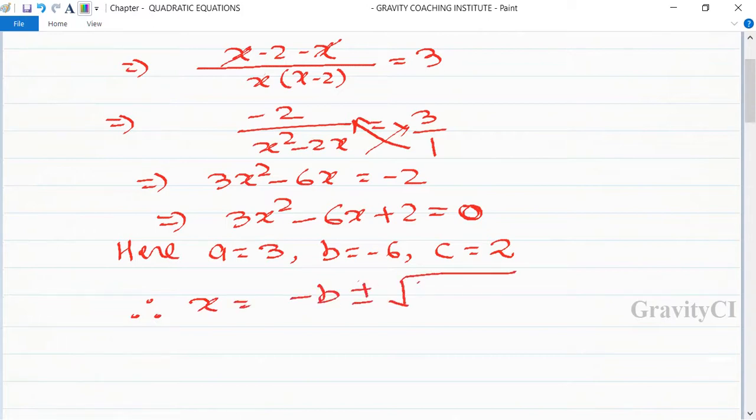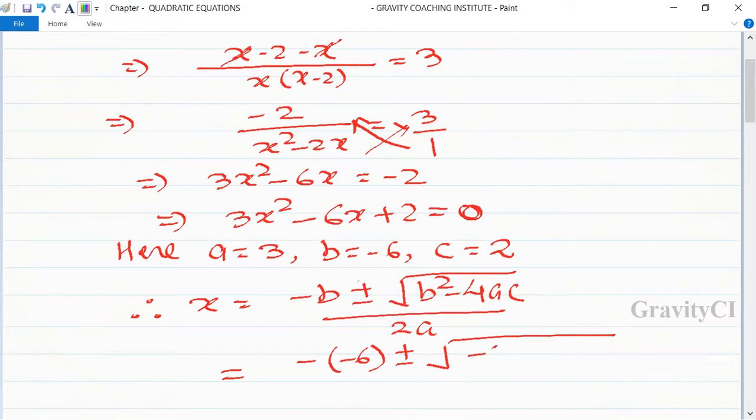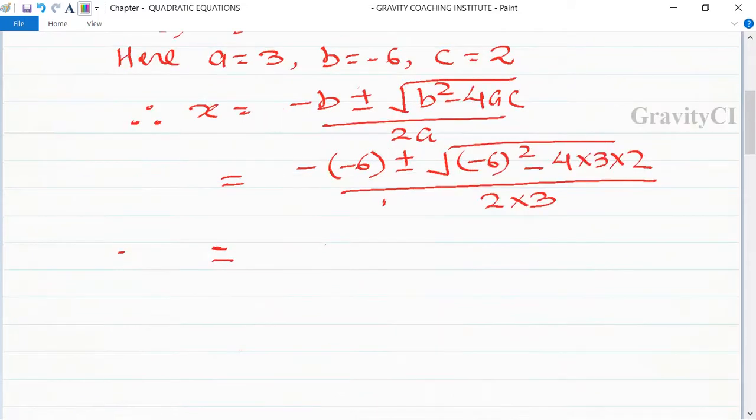So it is equal to minus of minus 6 plus minus root under minus 6 whole squared minus 4 into 3 into 2 upon 2 into 3. This equals 6 plus minus root under 36 minus 24 upon 6.